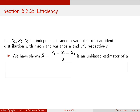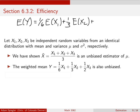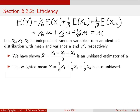Let's consider a second estimate, which we can get by looking at a weighted average. If we calculate the expected value of this estimate, we can break up sums and pull out constants: that gives 1/6 times the expected value of x1, plus 1/3 times the expected value of x2, plus 1/2 times the expected value of x3. Since all are drawn from the same distribution with expected value mu, that gives 1/6 mu plus 1/3 mu plus 1/2 mu, which sums to mu. So since the expected value of Y equals mu, this is also an unbiased estimate.